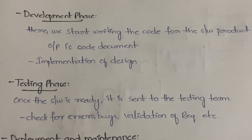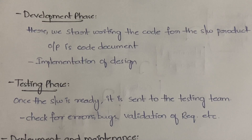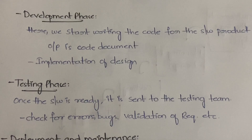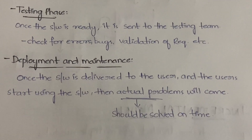Next is testing, which is very important. Once the software is ready, before sending it to the customer you have to test it. The testing team checks for errors, bugs, validation issues, and any required changes. For example, once the house is constructed, the contractor will inspect it before handing it over to the customer. If changes are needed, modifications are made. Similarly in software, if testers find errors or unmet requirements, those are reported and fixed.